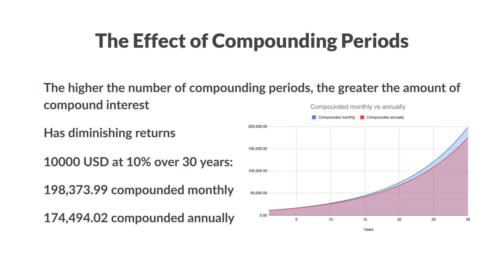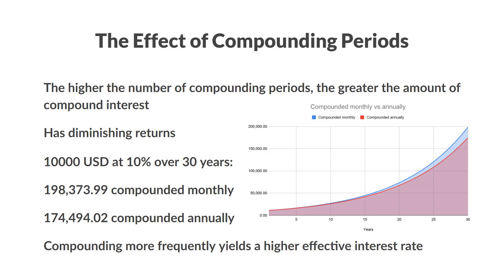In both cases, the interest rate was actually the same, but the numbers are actually very different. By compounding the interest monthly or any other time horizon more frequent than a year, you'll get a higher effective interest rate. In most countries, any loan provider must provide you this number and the total amount that you will owe, so make sure to always read the fine print when taking out a loan.